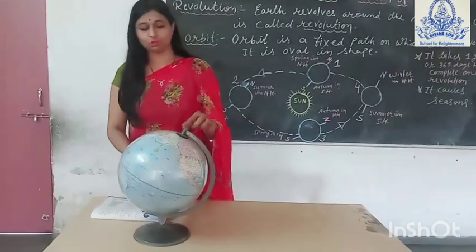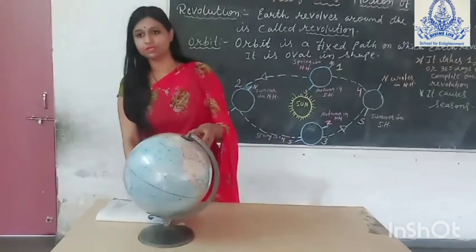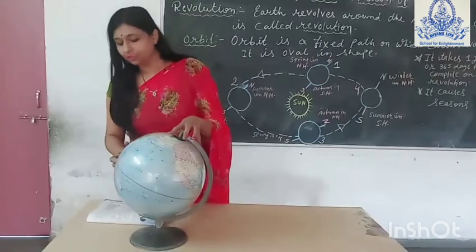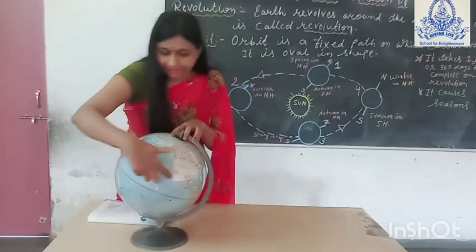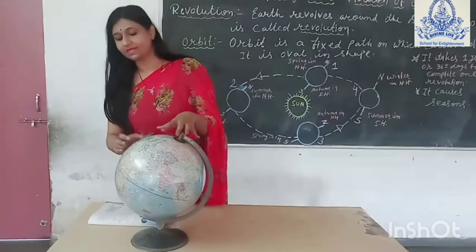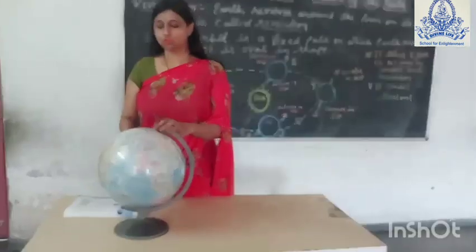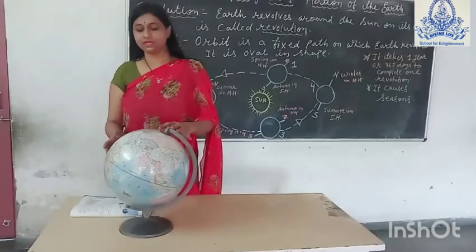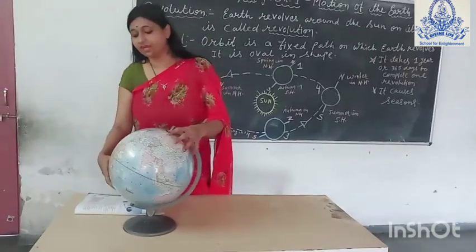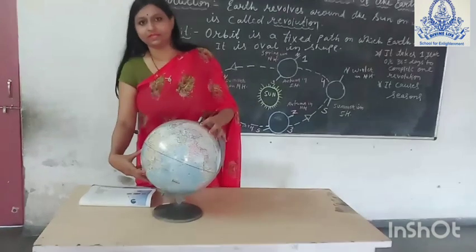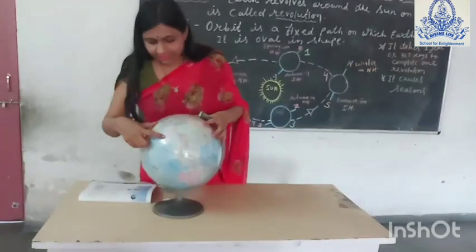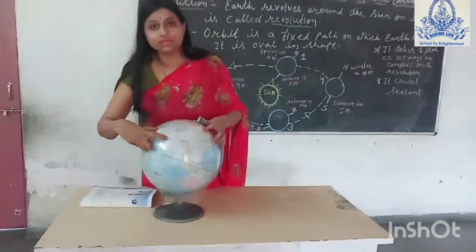The globe also has two poles: the North Pole and the South Pole. Similarly, the earth also has two poles — North Pole and South Pole. There is one line that divides the globe equally — this is the equator. The equator divides the globe into two parts. The part above the equator is called the northern hemisphere, and the part below the equator is the southern hemisphere. Our India is located above the equator, so it is in the northern hemisphere.